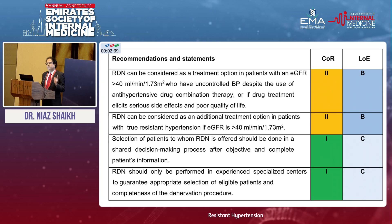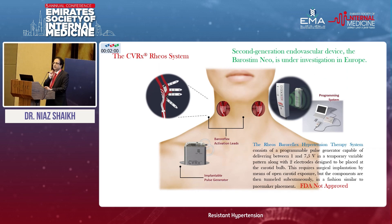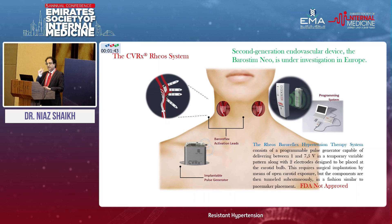Renal denervation is just an additional tool and won't stop all medications, because there are different mechanisms for blood pressure. Carotid sinus stimulation is another approach — the carotid baroreceptors modulate autonomic tone by inhibiting sympathetic cardiovascular drive and stimulating the vagus nerve. This therapy attempts to normalize the imbalance between sympathetic and vagal activity using a second-generation endovascular catheter-based device that delivers pulse stimulation to the carotid bulb, though it is still not FDA approved.